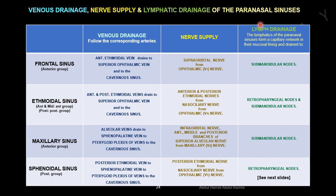Lymphatic drainage. The lymphatics of the paranasal sinuses form a capillary network in the mucosal lining. The frontal sinus drains into submandibular nodes. Ethmoidal sinuses drain to retropharyngeal and submandibular nodes. Maxillary sinus drains into submandibular nodes. Sphenoidal sinus drains into retropharyngeal nodes.